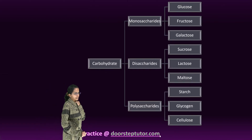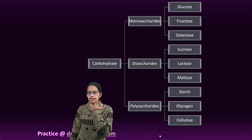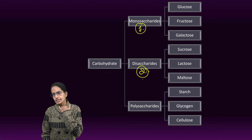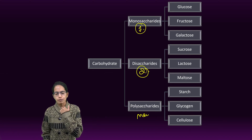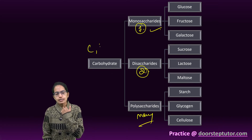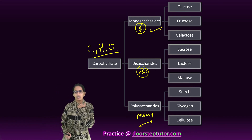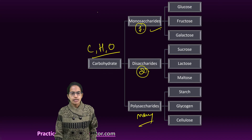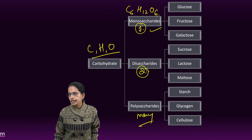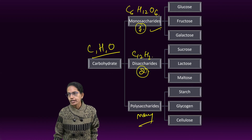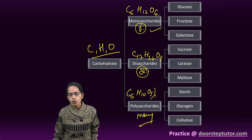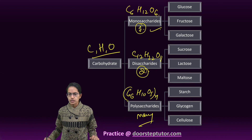Coming to carbohydrates, they can be classified as monosaccharides which have just one molecule, disaccharides which have two, trisaccharides which have three, and polysaccharides which have many. Carbohydrates are composed of carbon, hydrogen, and oxygen. The formula for monosaccharides is C6H12O6, for disaccharides it is C12H22O11, and for polysaccharides it is (C6H10O5)n, where n is the number of molecules present.